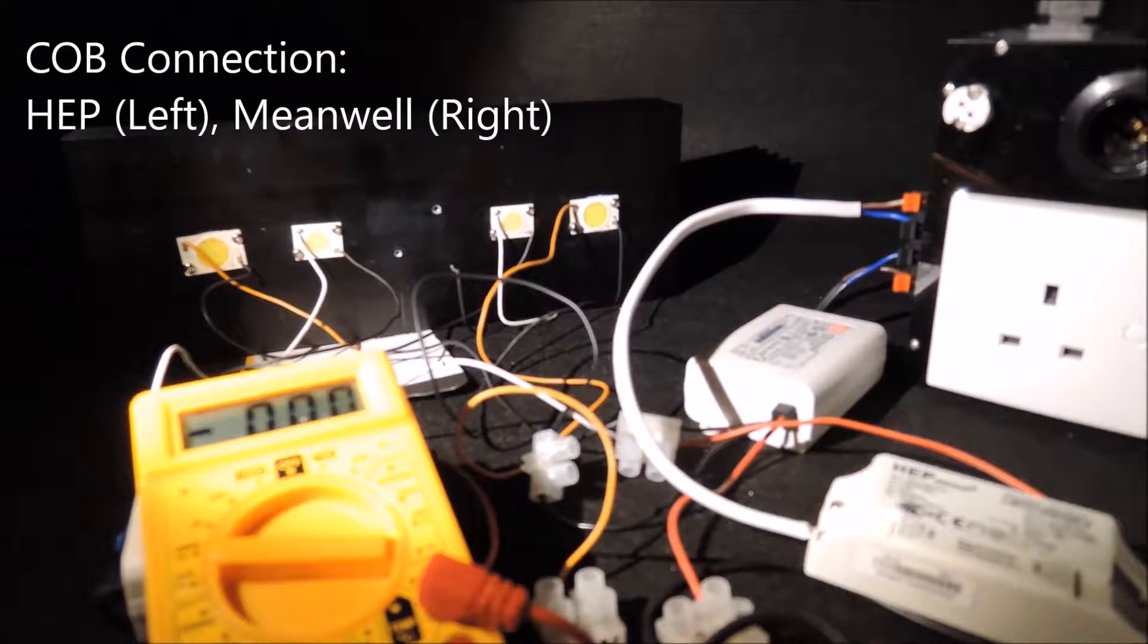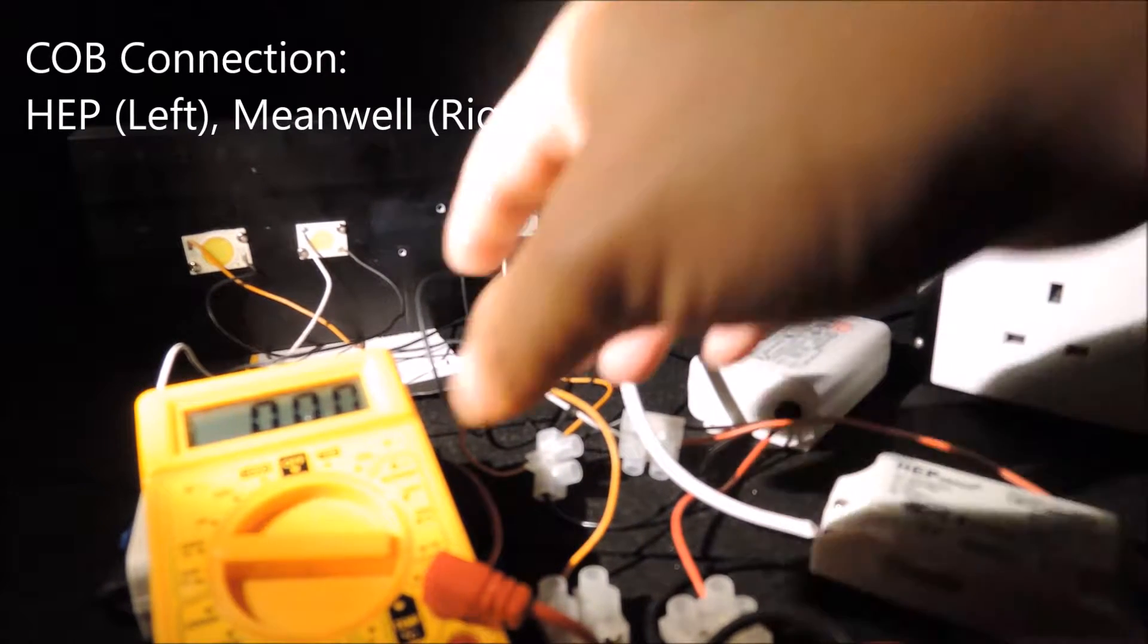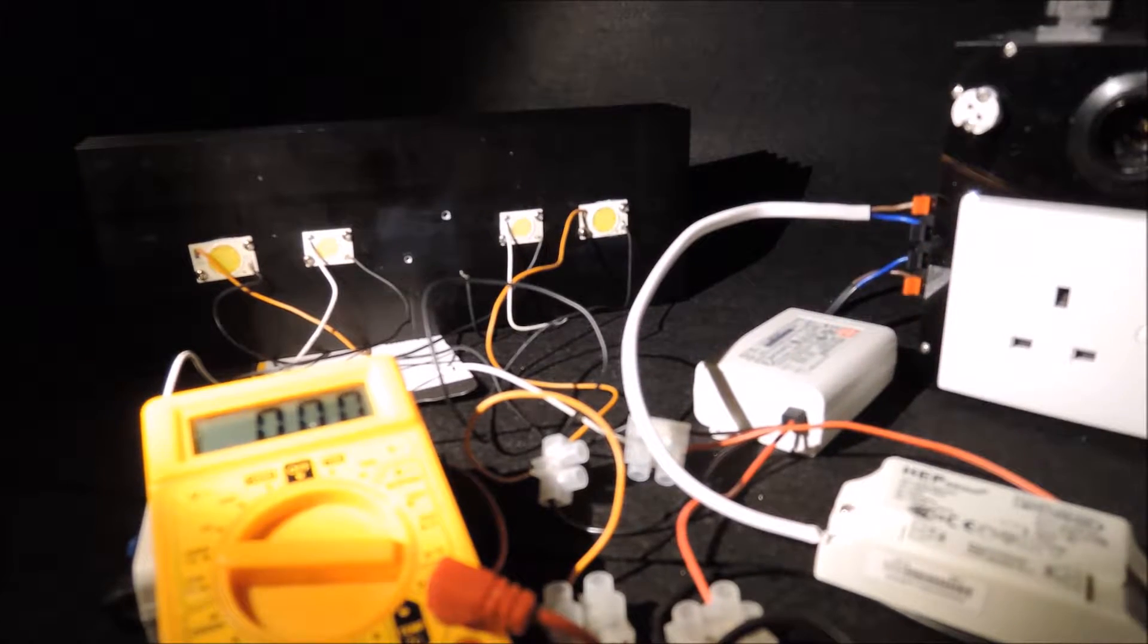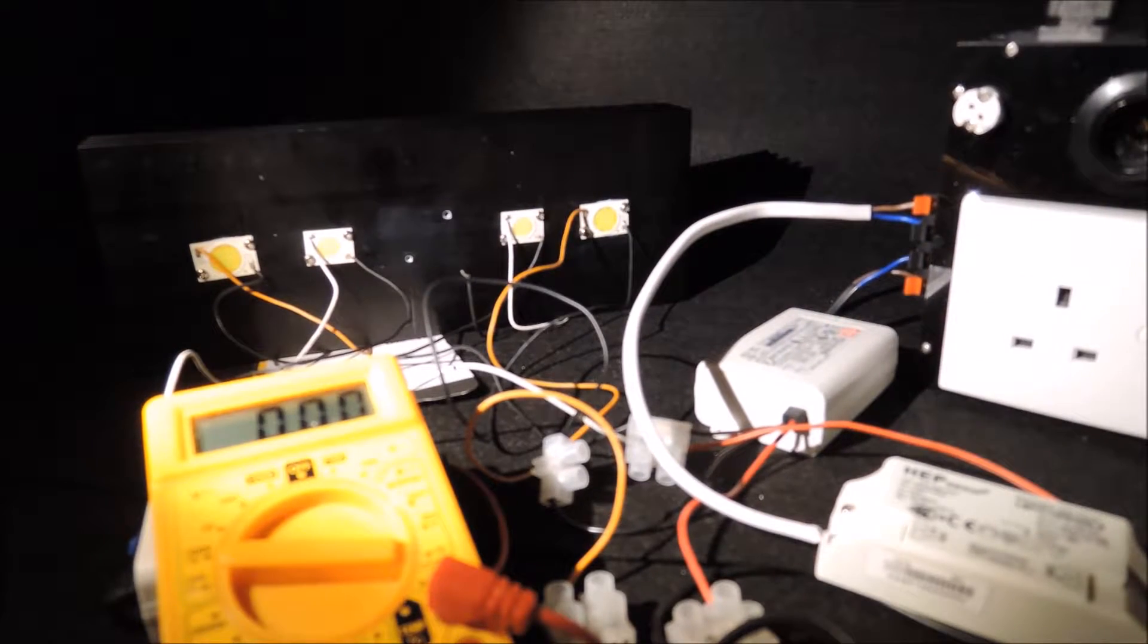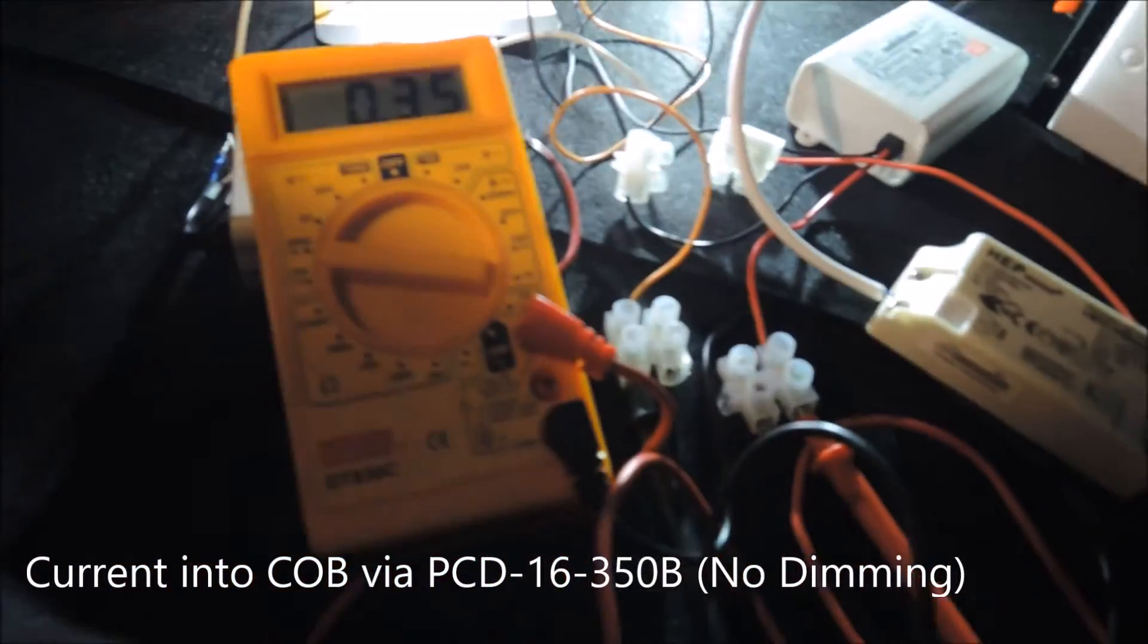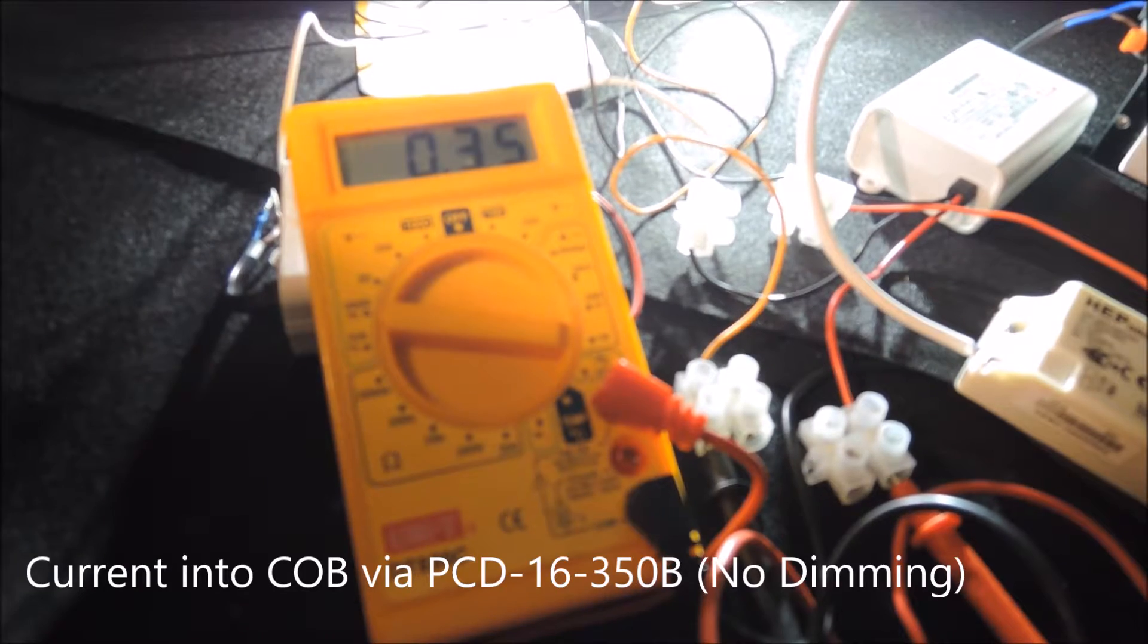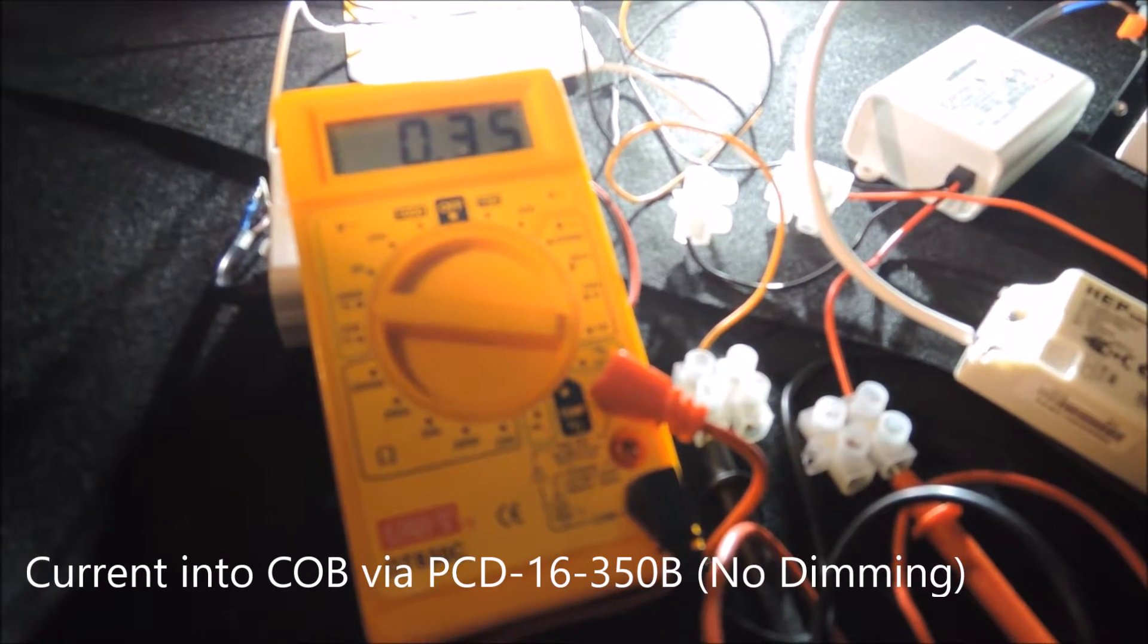To monitor the current going into the COB, we have a multimeter connected to the Meanwell driver, which now shows 350mA output before we start dimming.